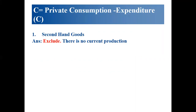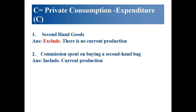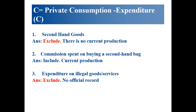Second-hand goods are excluded from GDP because there is no current production involved. Similarly, illegal goods and services are excluded since they are not in official records. Only officially recorded goods and services are included in GDP.